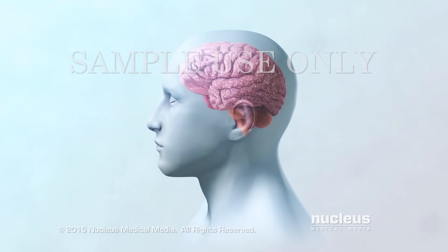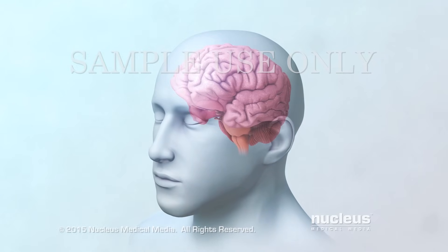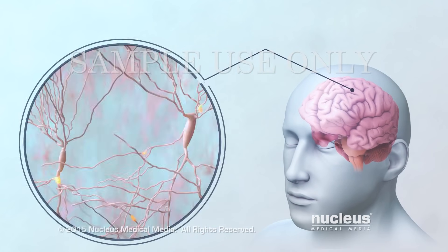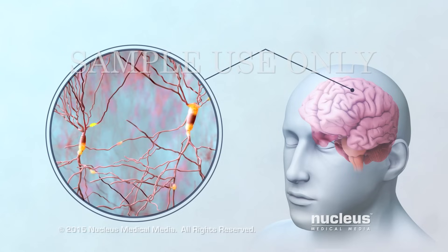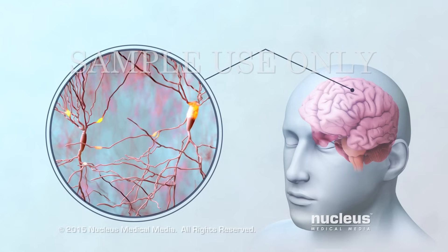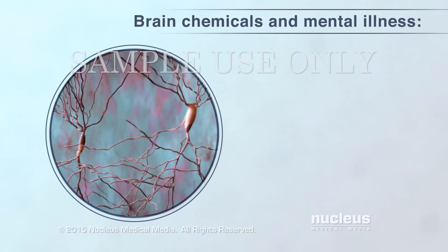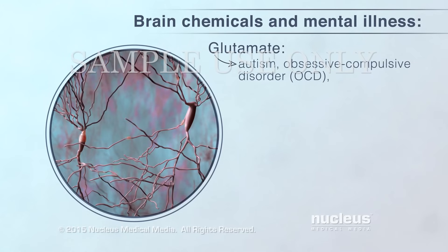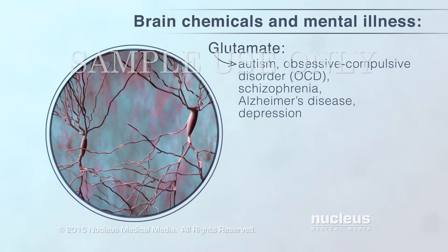When there is an imbalance of chemical messengers in the brain, neurons may have trouble passing messages between each other. The most common chemical messenger is glutamate. It increases the chance that an impulse will form in other neurons. People with mental illnesses such as autism, obsessive-compulsive disorder, schizophrenia, Alzheimer's disease, and depression may have problems making or using glutamate.